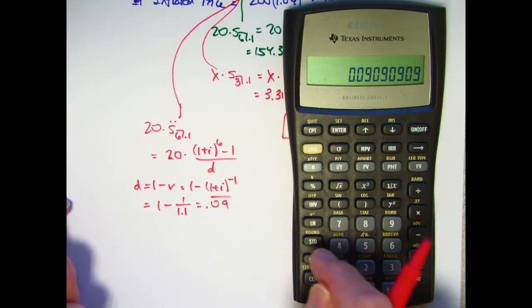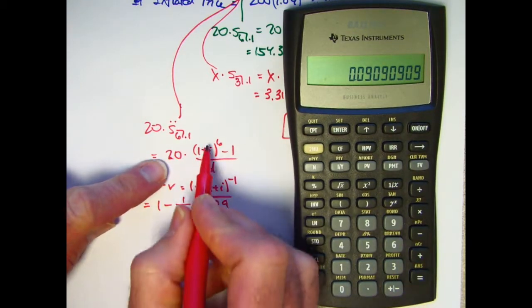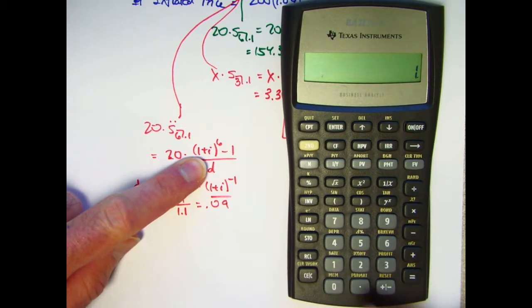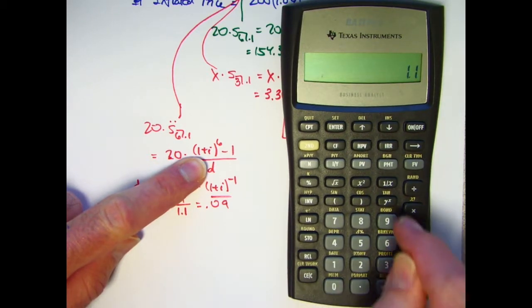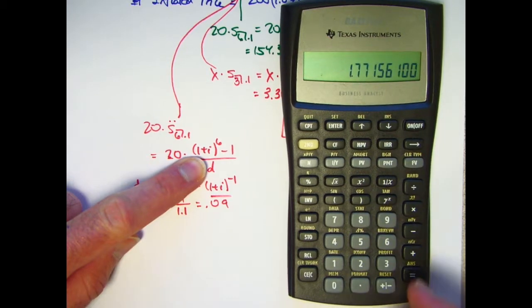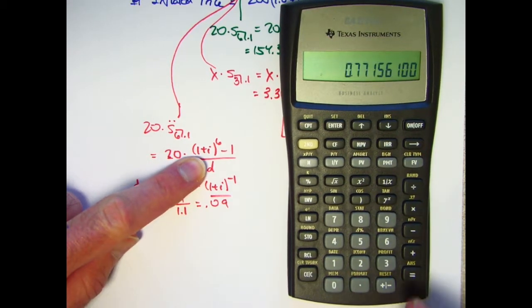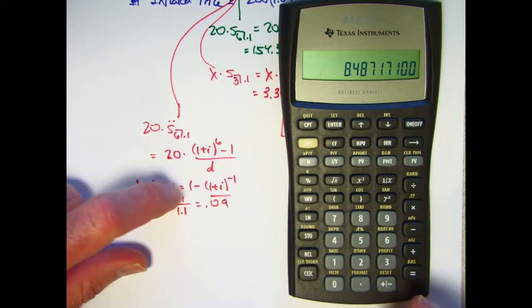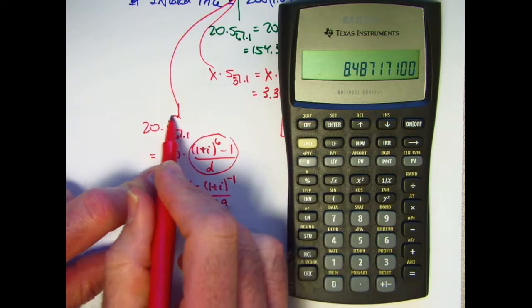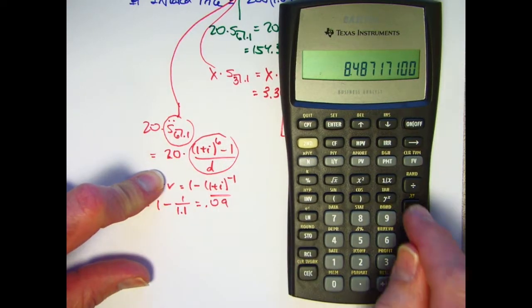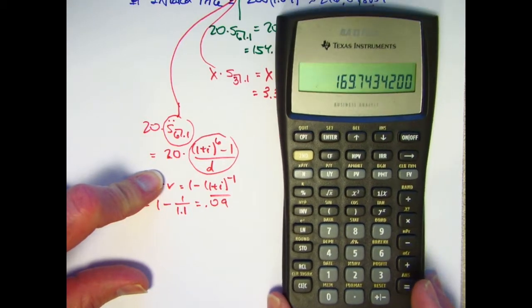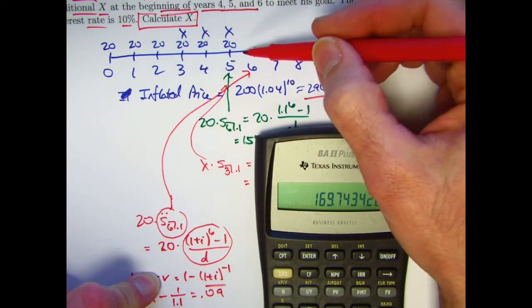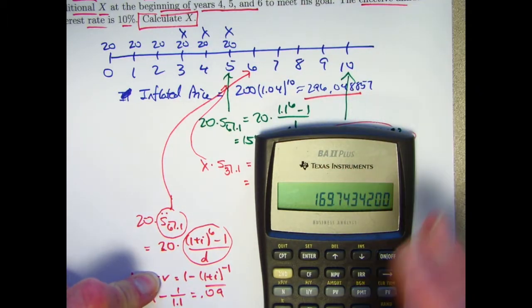Let's go ahead and use that. I'll go ahead and store it in register 0. Let's use it back up here. Remember, i is 0.1, so I'd have 1.1 to the 6th power minus 1, divide by what's stored in register 0. That is the value of this or this. Multiply it by 20, and we get the future value at time 6 of that series of payments of six 20s is about 169.743.